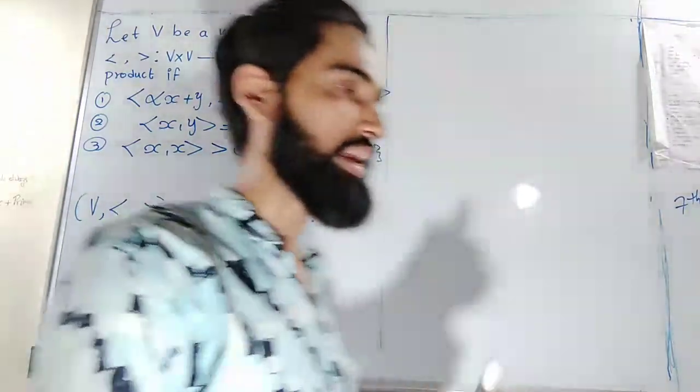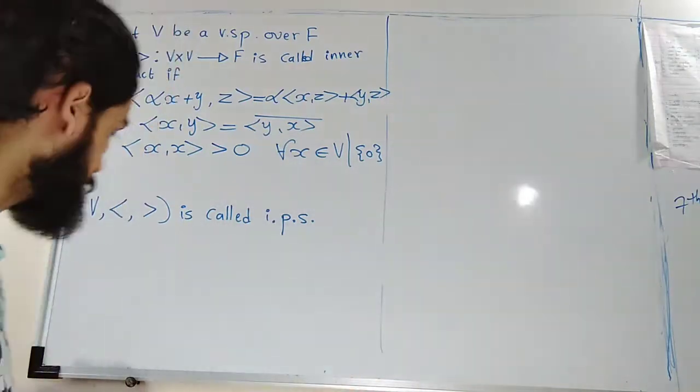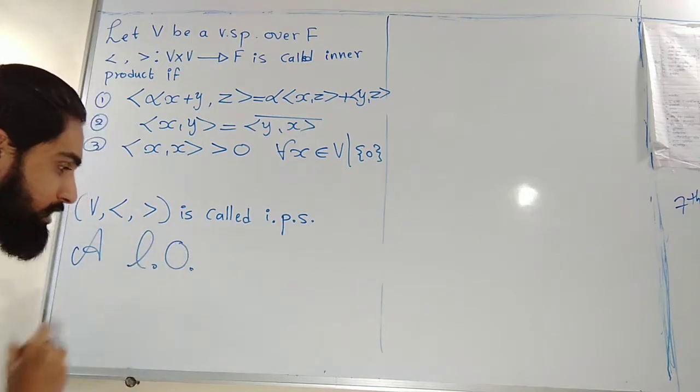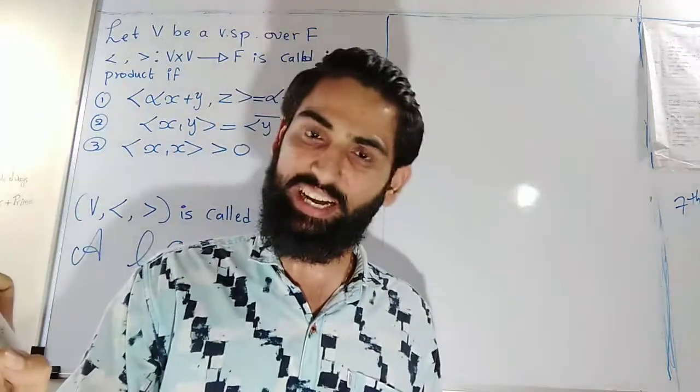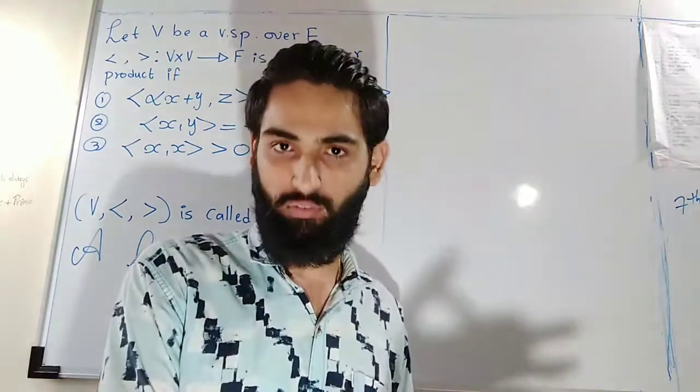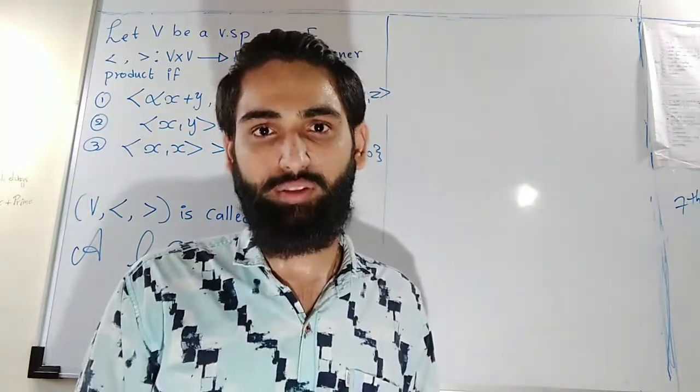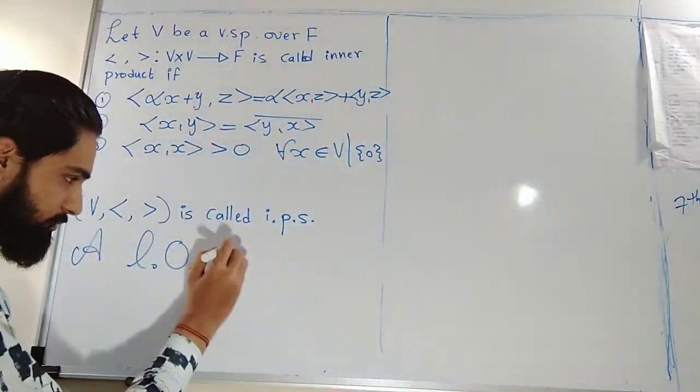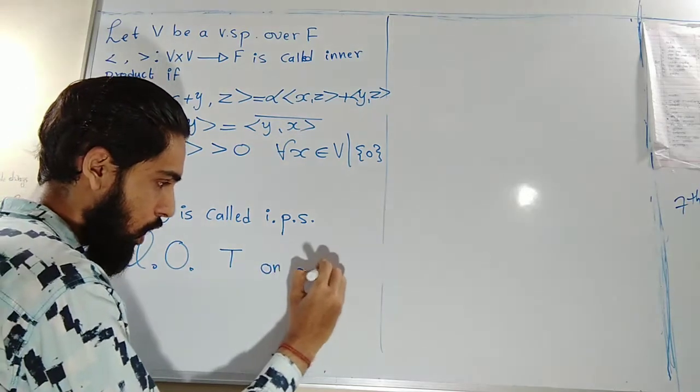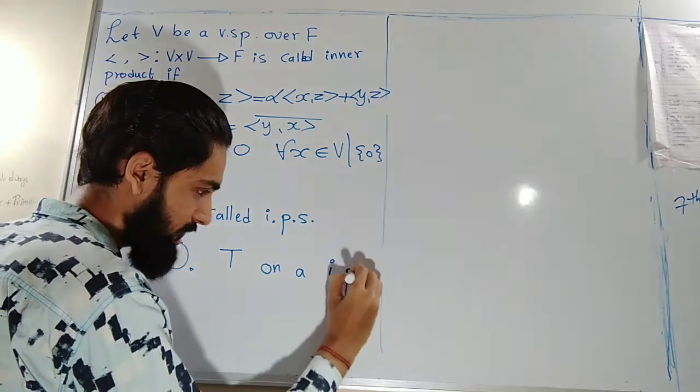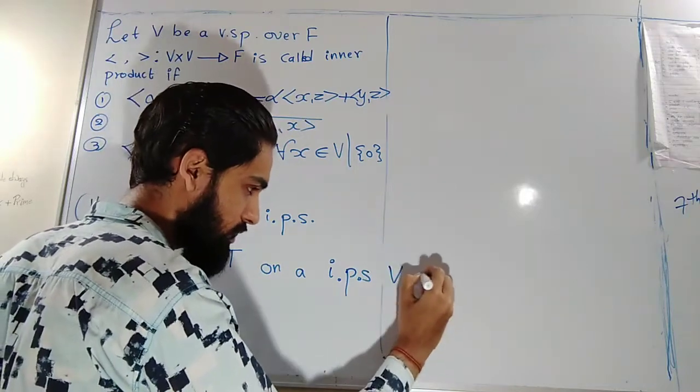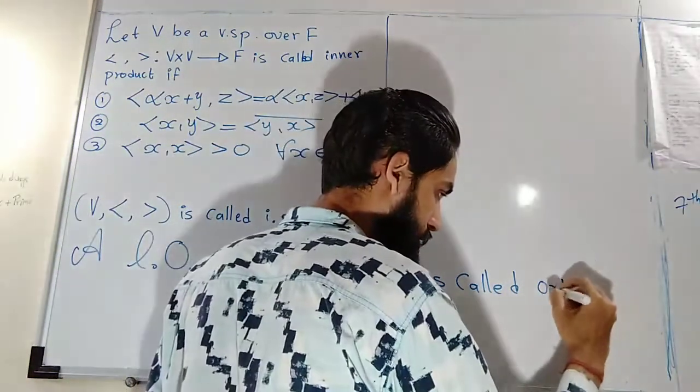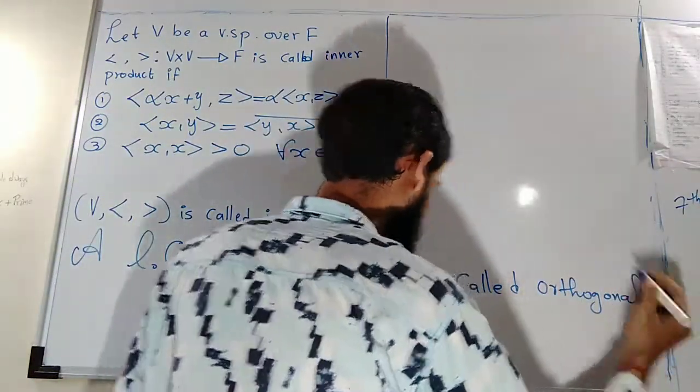So with this definition, I can define what is called an orthogonal transformation. A linear operator—I will use the word linear operator. It is a linear transformation from V to itself. A linear transformation from a vector space to itself is called a linear operator. A linear operator T on an inner product space V is called orthogonal transformation if—